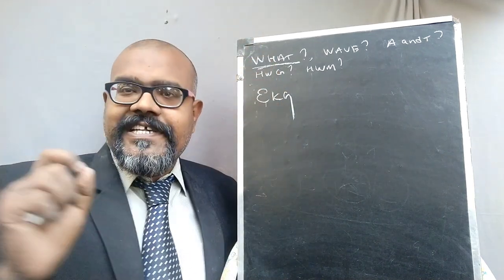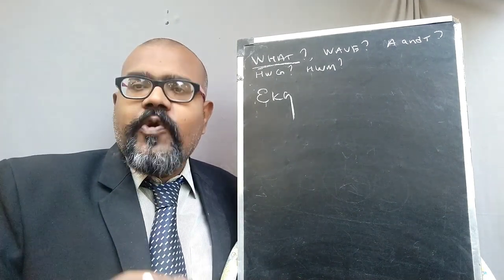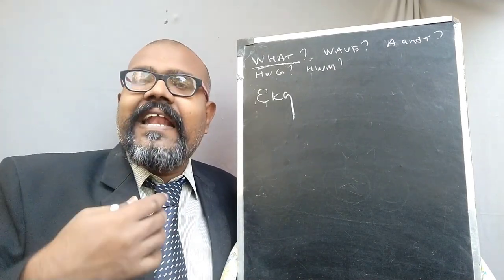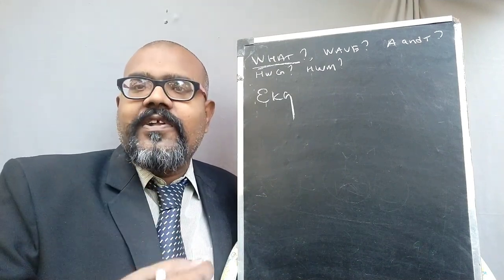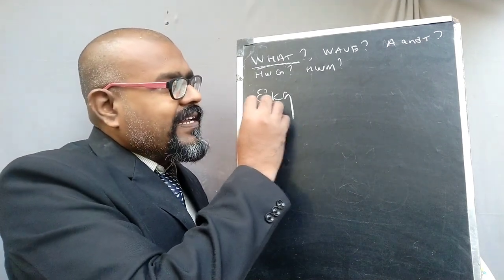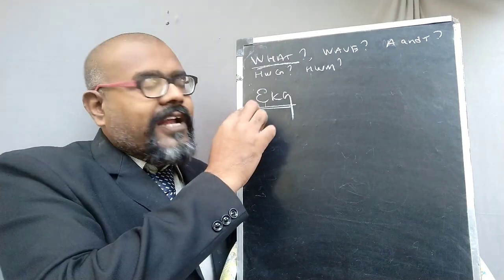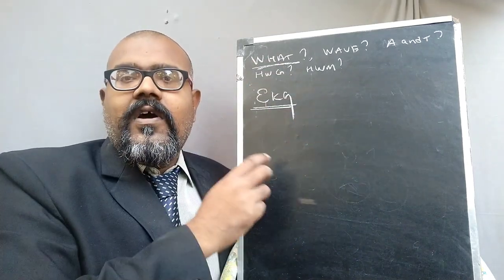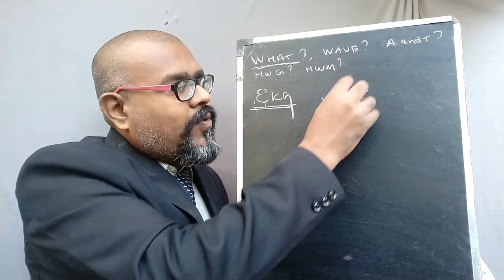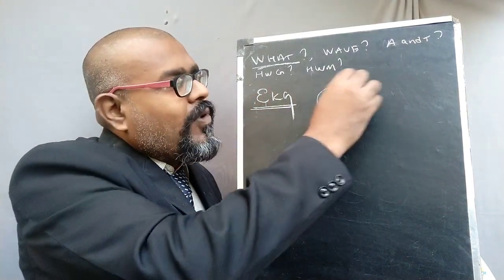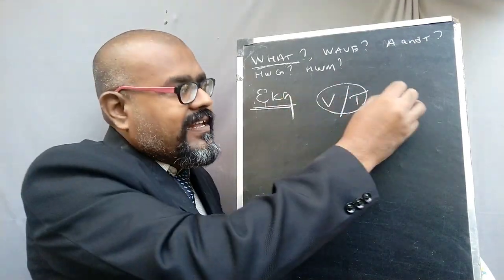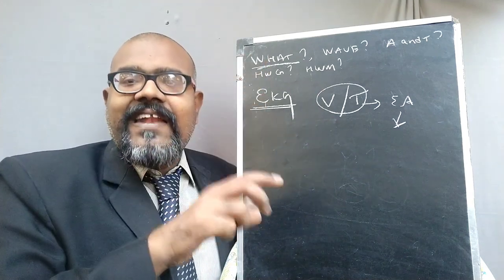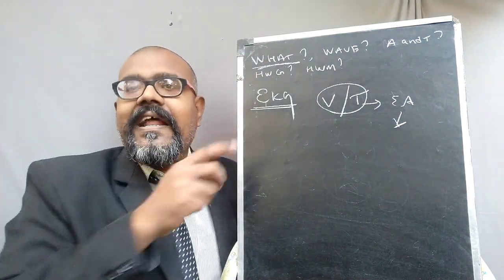The first question is: what is ECG? Electrocardiography is a process of producing an electrocardiogram. The electrocardiogram is a graphical representation of voltage versus time of the electrical activity of the heart, produced by electrodes placed on the skin. Electrocardiography is also represented as ECG or EKG.